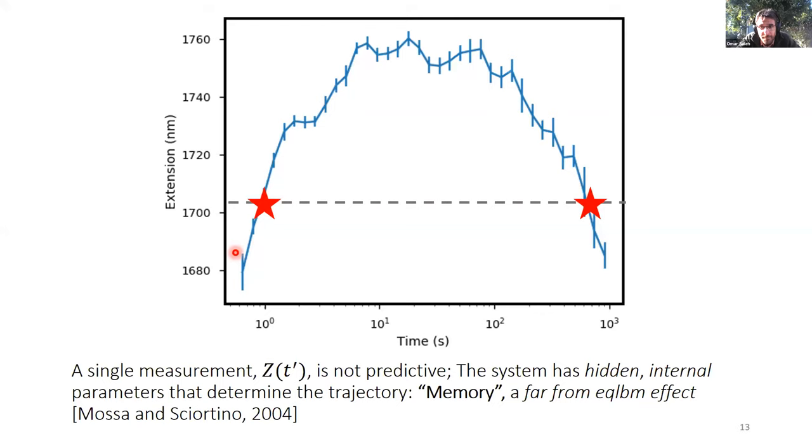In fact, the chain knows something about the past. When it's at this extension, it knows whether it was shorter or longer before, and therefore knows whether it will increase or decrease in extension. There are hidden internal parameters that we are not measuring from an external measurement. That is memory. So this chain has memory, and the COVAX effect is a demonstration of memory in this chain, history-dependent dynamics.